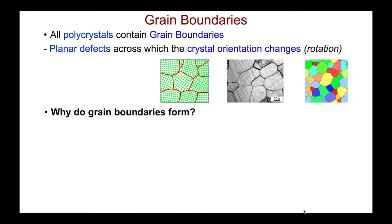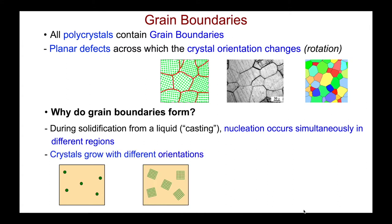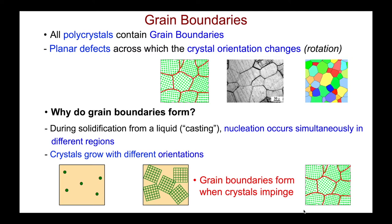Why do grain boundaries form? During solidification from a liquid — a so-called casting process — individual solid grains can nucleate simultaneously in different regions of the sample. When they start to grow they do so with different crystallographic orientations, and at some point during growth they will impinge, leaving a series of grain boundaries in the material after complete solidification.